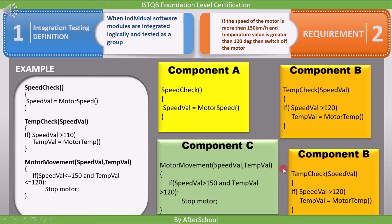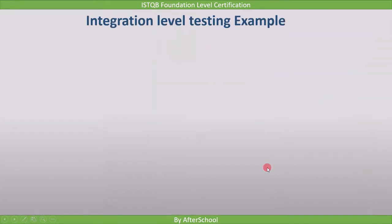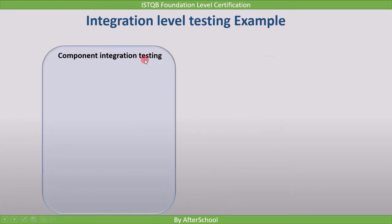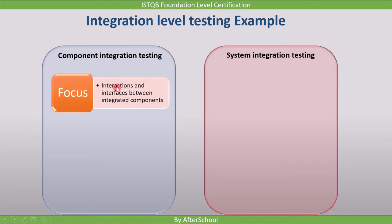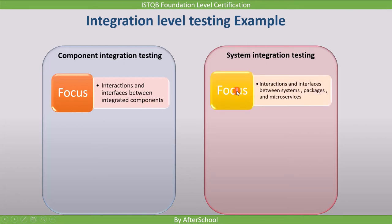Now let's take a look at the levels of integration testing. The first level is component integration testing, and the second level is system integration testing. Component integration testing focuses on interactions and interfaces between integrated components — we check interactions between two components. In system integration testing, you check interactions and interfaces between systems, packages, and microservices. If there are multiple systems, we check the interaction between those systems.